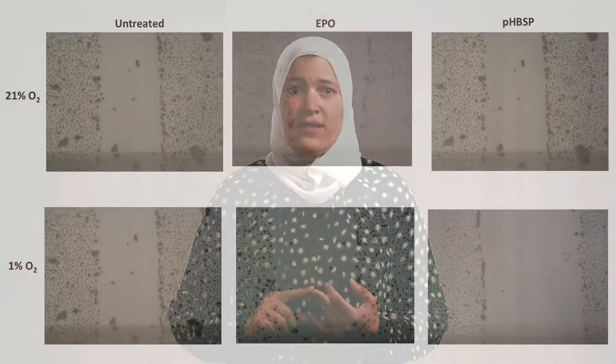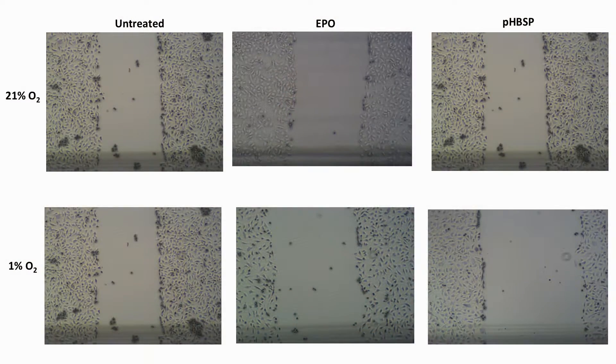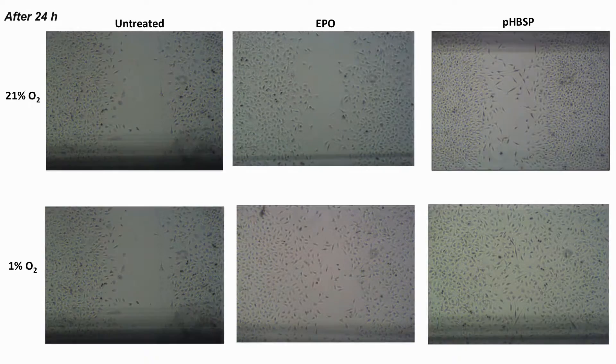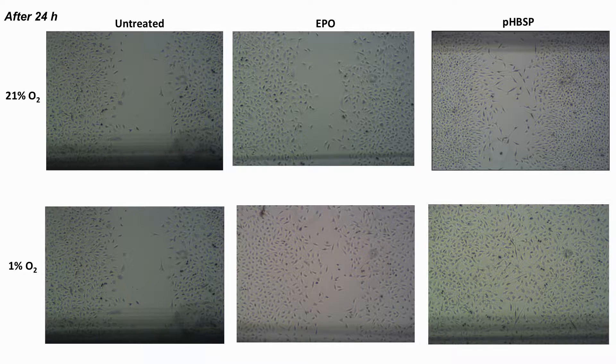Using the Scratch assay, we found that under hypoxic conditions, EPO and its analogues enhanced Scratch closure by promoting cell migration and proliferation, an effect that was not seen under normoxic conditions. Furthermore, EPO protected BAEC from apoptosis under hypoxic conditions.